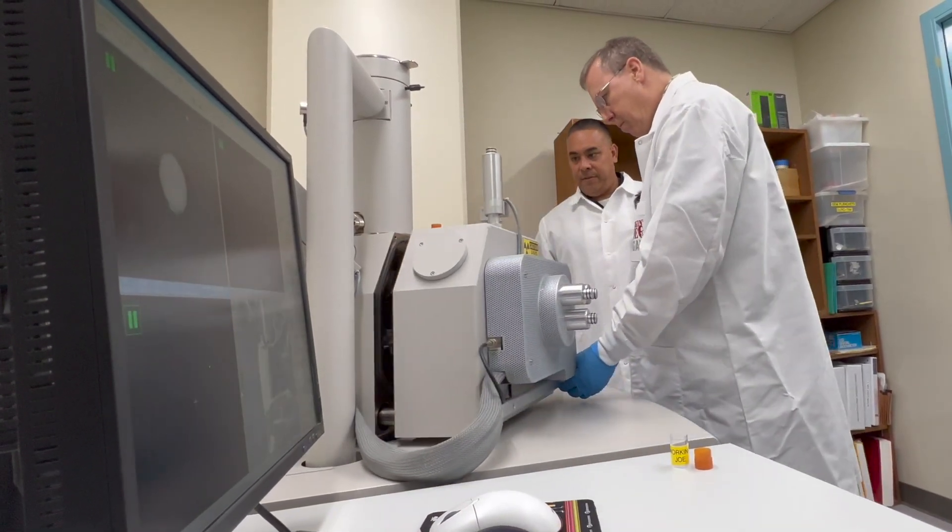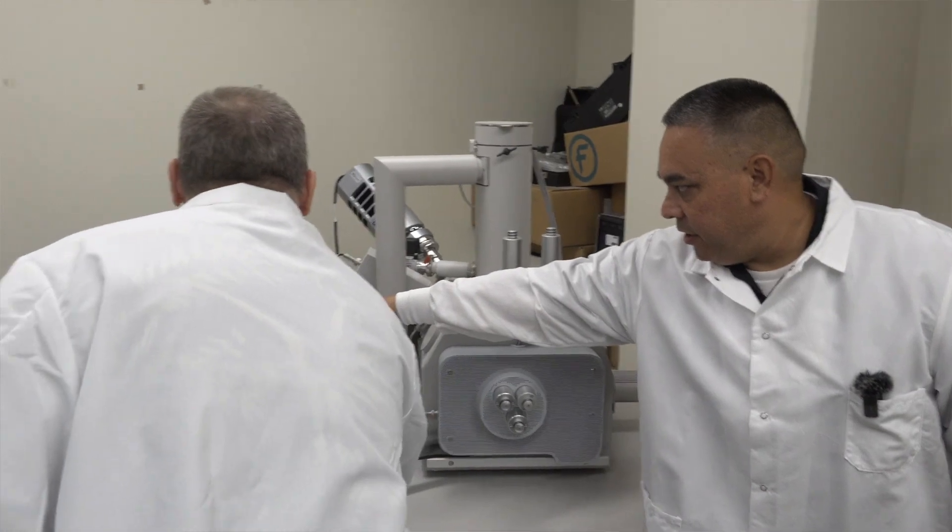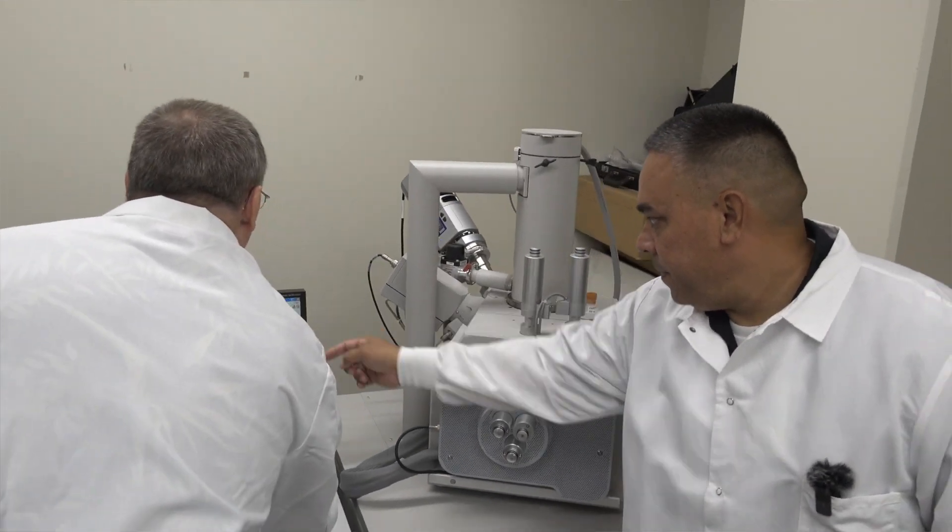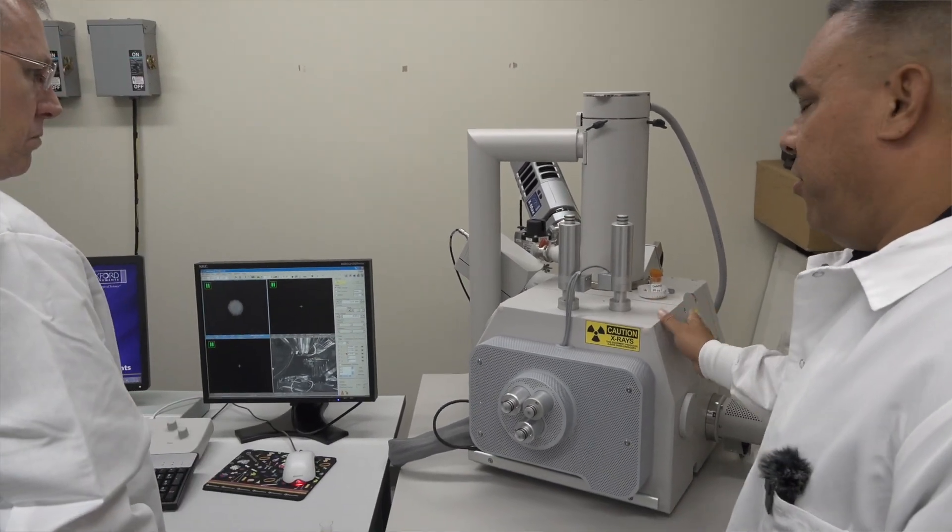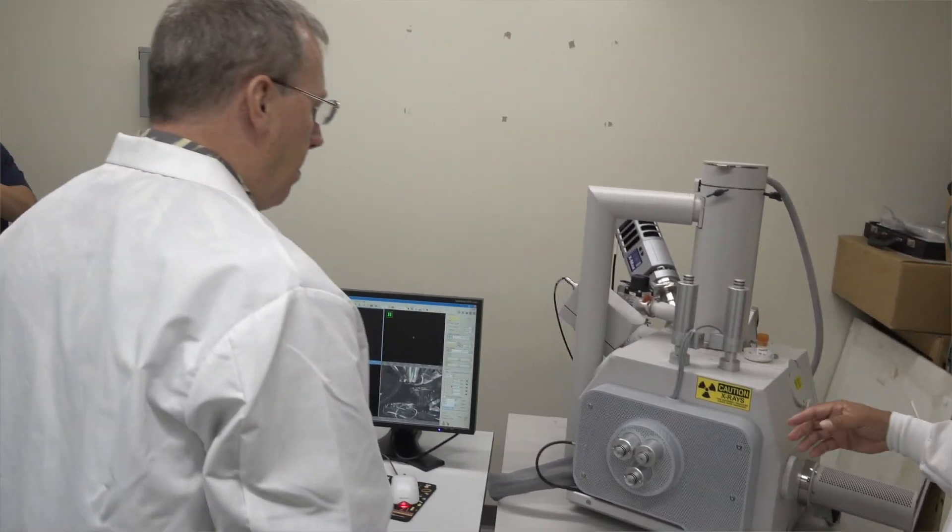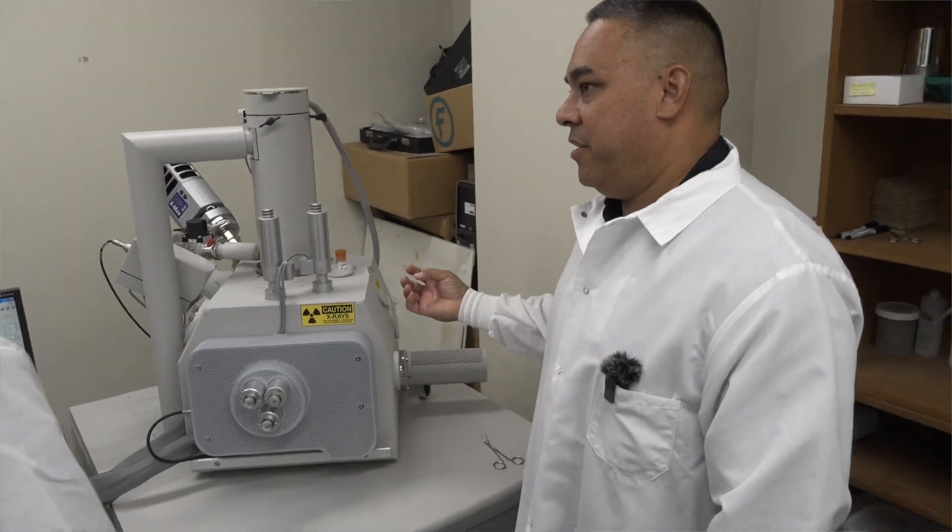All we do is just close it right there and click on pump and what it's going to do is it's going to start pumping down the chamber. It's going to take out all the air from the chamber. We need to have a real strong vacuum in here.